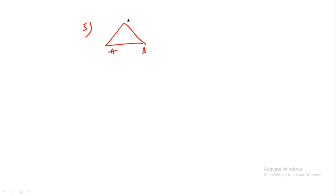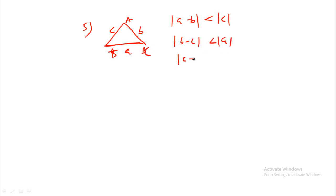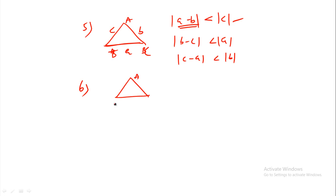In triangle ABC with sides small a, b, c, the difference of any two sides is always less than the third side: |b minus c| less than a, and |c minus a| less than b. The sum of any two sides is always greater than the third side, and the modulus of the difference is always less than the third side.